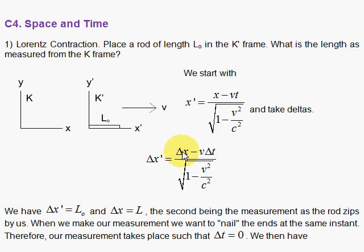Delta x prime equals delta x minus v delta t. Now delta x prime is going to be the length of the rod in the frame in which the rod is, so that is L0. And delta x, what I measure, is going to be what I get for L in the laboratory frame as I watch it move. Notice that when you take this measurement, you need to nail both ends at the same time.